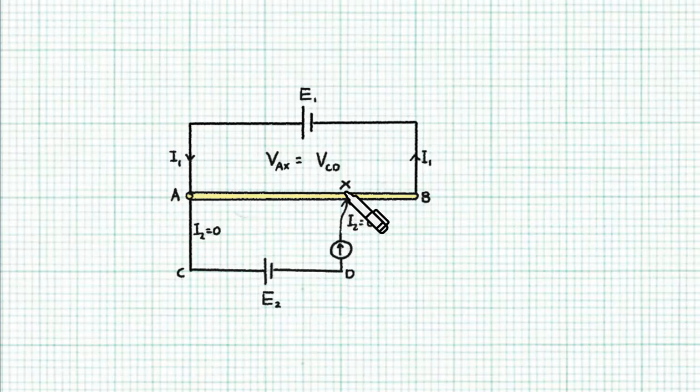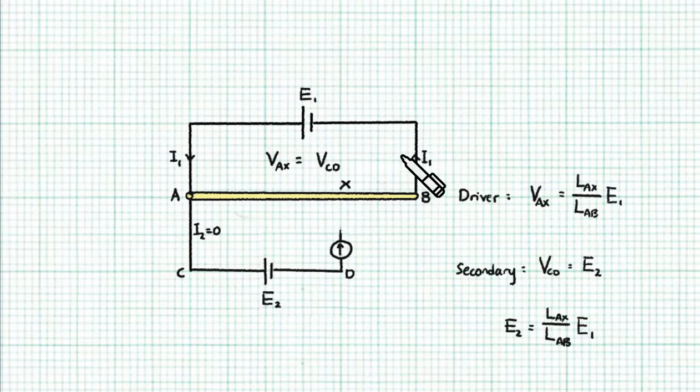Now, since there's no current going between the driver and the secondary circuit, we might as well pretend that they are not connected at all. And when we do that, the analysis of these double loop circuits become very simple. For the driver circuit, we know that VAX is a fraction of E1. So by the potential divider principle, VAX is LAX, which is the balance length, divided by LAB, which is the total length of the slide wire, times E1.